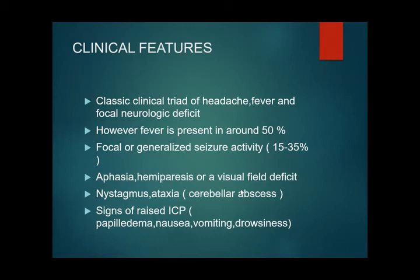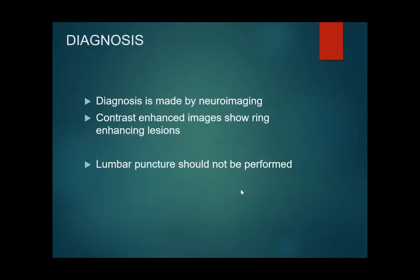Signs of raised ICP can be present — papilledema, nausea, vomiting, altered level of consciousness, and unilateral or bilateral sixth nerve palsy. Diagnosis is made by neuroimaging with contrast-enhanced images showing a ring-enhancing lesion. MRI is more sensitive; CT can be used where MRI is not available. Lumbar puncture should not be performed in these patients.